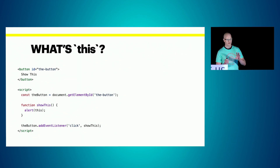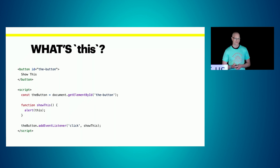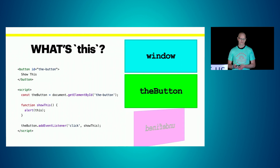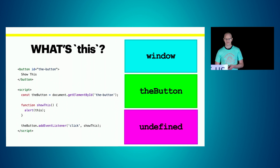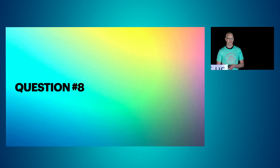Question number seven: we've got that same button, plus a script section where we pull the button out of the DOM, declare a global function called 'showThis' that runs an alert, and add an event listener to the button to run 'showThis' on click. What's 'this'? Is it window, the button, or undefined? If you answered the button, congratulations — you got that one right.